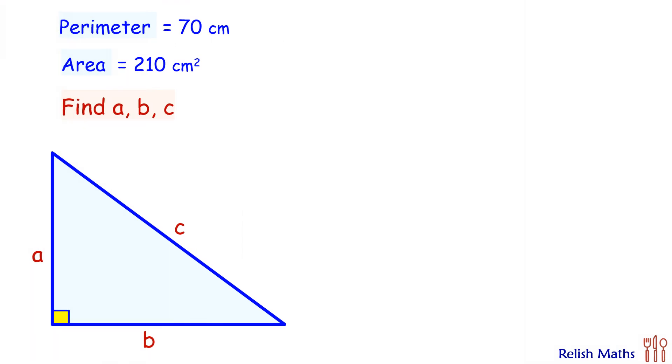Let's check the solution. We have to find the value of three variables, so we need three equations here. Perimeter is 70 centimeters, thus a plus b plus c equals 70. Area is 210, thus half of a times b is 210, or ab is 420.